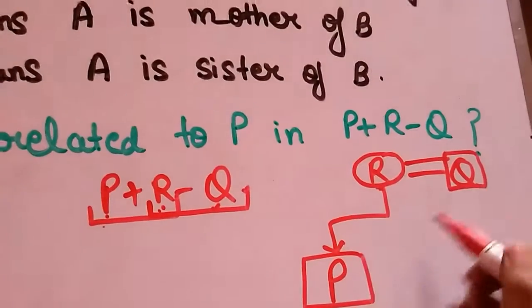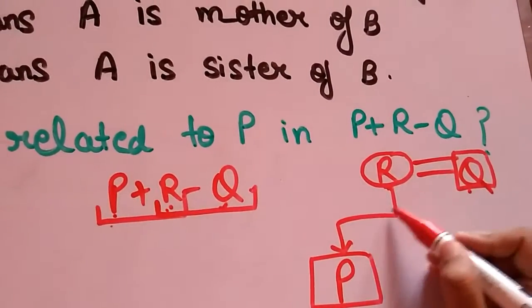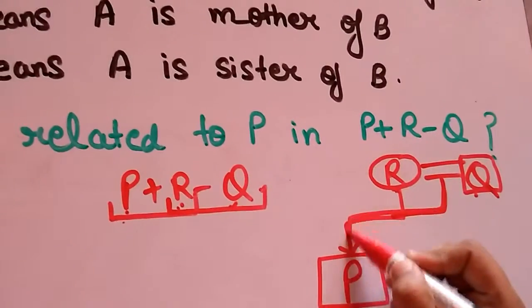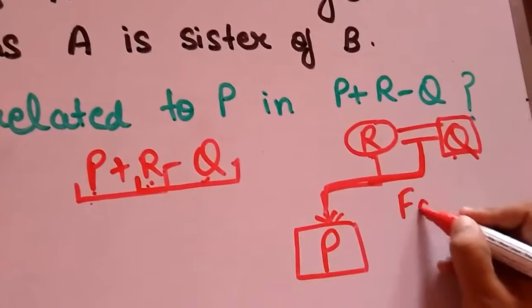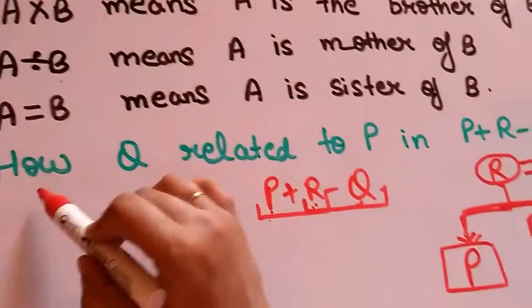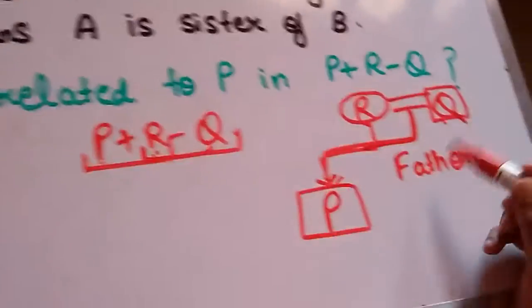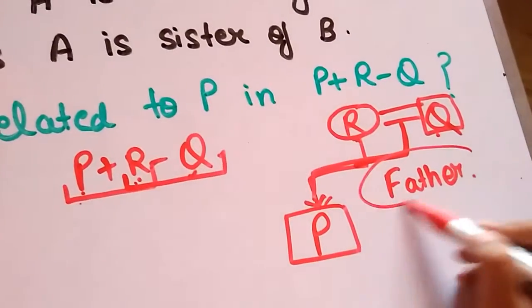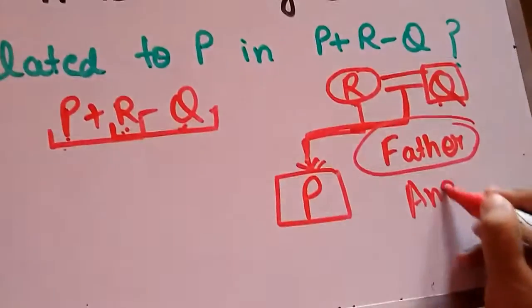So clearly Q is the father of P, and this is what we have to find out: how Q is related to P. So Q is the father of P. This is your answer.